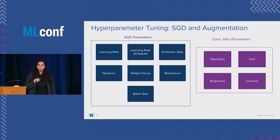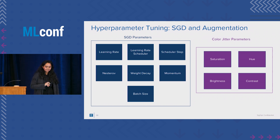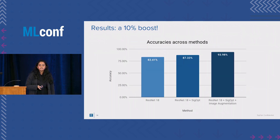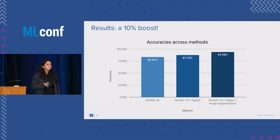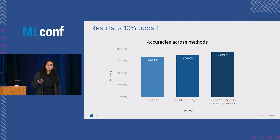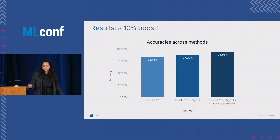We're tuning stochastic gradient descent and image augmentation through color jitter. The results are quite good: we get a 10% boost over ResNet 18 fine-tuned alone, and a 6% boost over ResNet 18 fine-tuned with an optimization strategy attached. We're able to leverage our supervised technique to effectively inform our unsupervised augmentation technique.